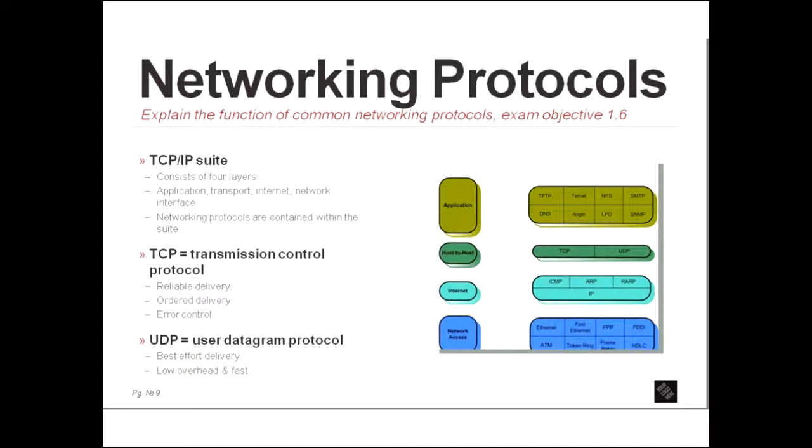You're going to need to know the difference between TCP, which is transmission control protocol, and UDP, which is user datagram protocol. Both of these are at the transport layer of the OSI model, or the host-to-host layer of the TCP IP Suite. They both kind of perform the same function, but a little bit differently. TCP is a reliable delivery service, which means that it requires the receiving host to send an acknowledgement back to the sender. If the sender does not receive the ACK, it resends the information. It also performs orderly delivery, which means it sequences the packages.